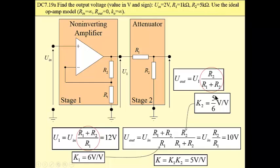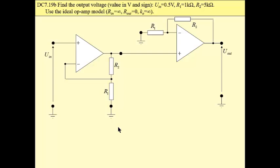The gain of the attenuator is 5 over 6. Then total gain is 5, which means that output voltage is 10 volt. This voltage is 12.